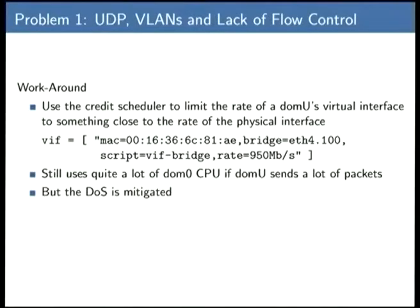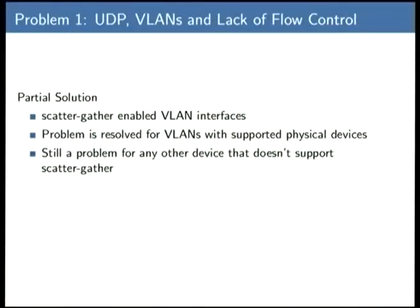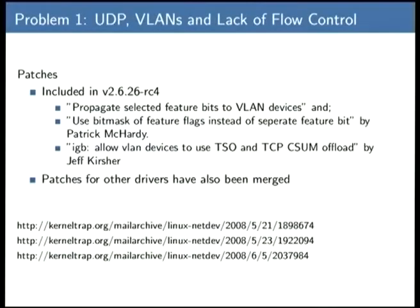The workaround, which will work on essentially any version of Xen on any kernel, is to rate limit using the virtual NIC's own rate-limiting facility. This still uses quite a bit of CPU because there's dropping going on, but it drops them early enough that the DOS scenario doesn't manifest. The real solution is to enable scatter-gather on VLAN, which has been done in newer kernels. But the problem could still manifest if you find another interface — physical or virtual — that doesn't support scatter-gather. I doubt anyone is running into it other than the VLAN case.